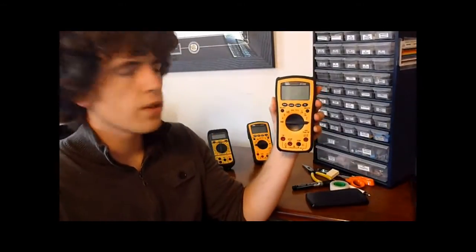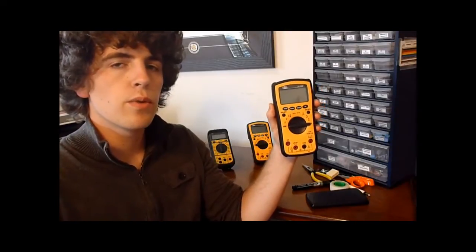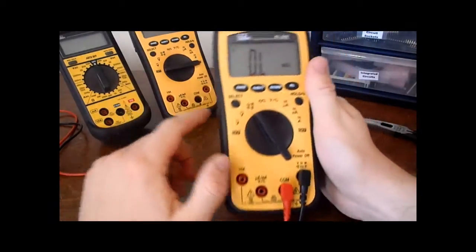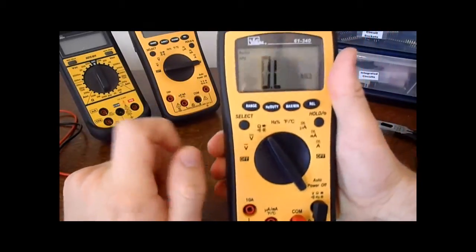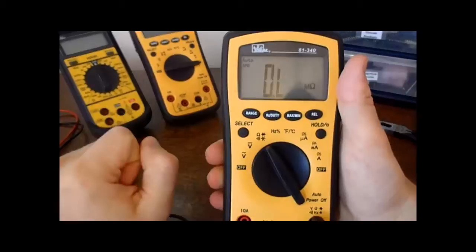Today I'm doing a quick review on the Ideal Multimeter, the 61-340. This is the actual model itself. As you can see right here, it's got an ergonomic taper for your hand, which is a really nice feature. It's got a really large LED display, which I love.